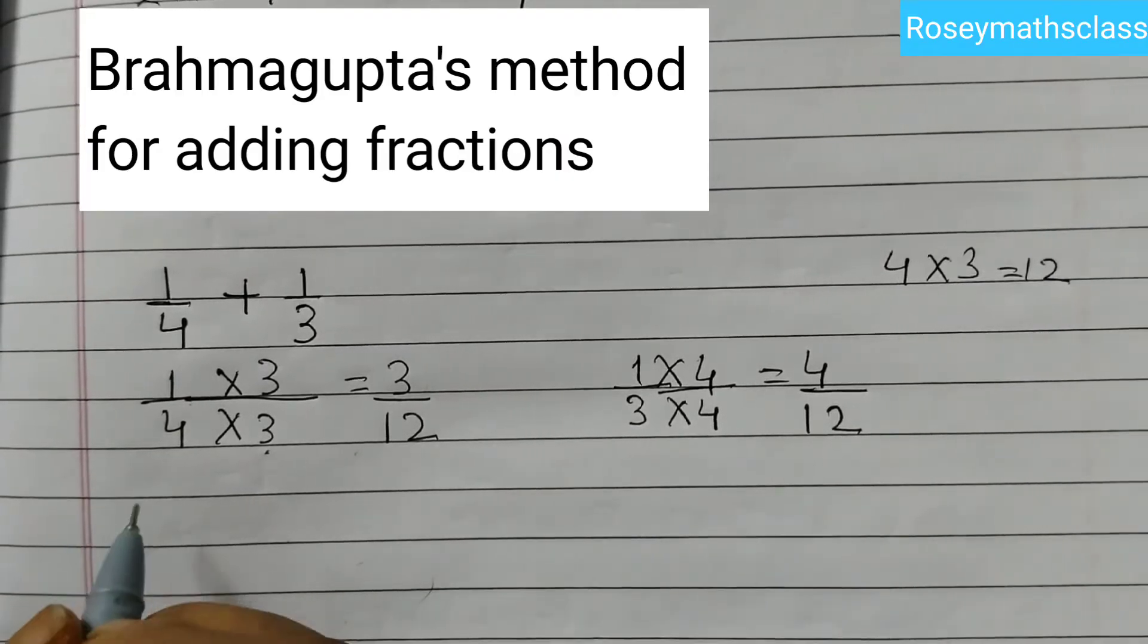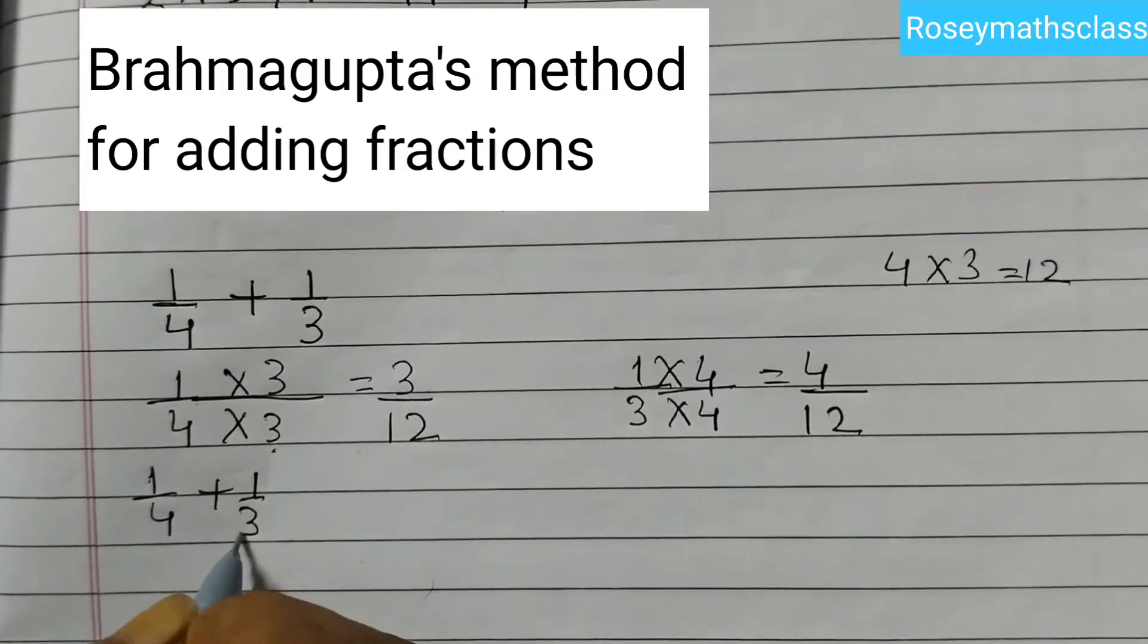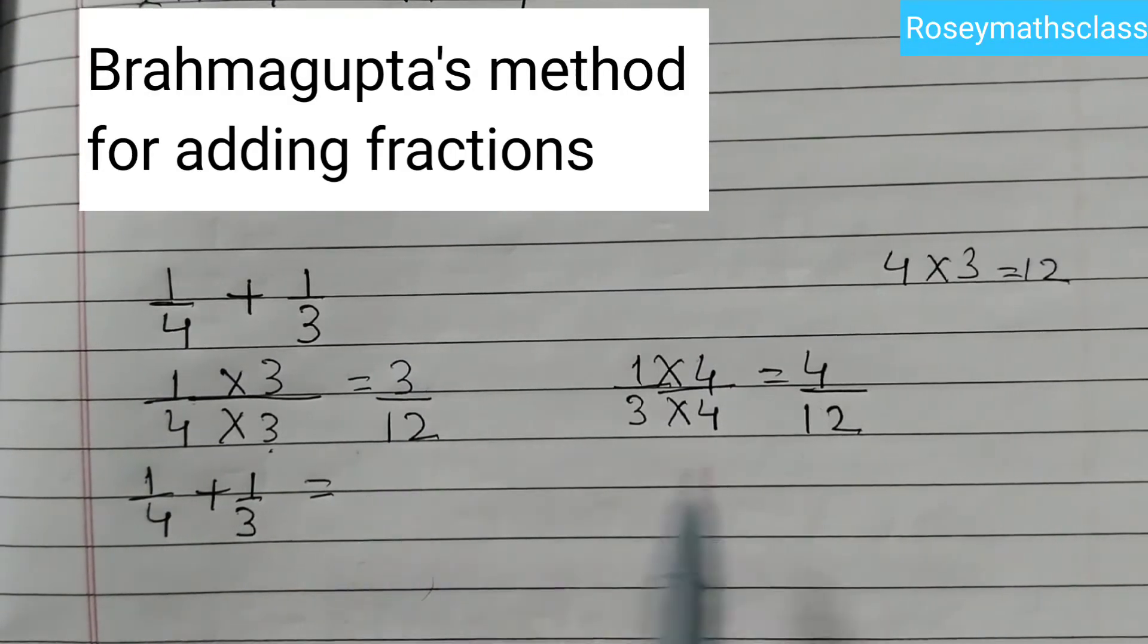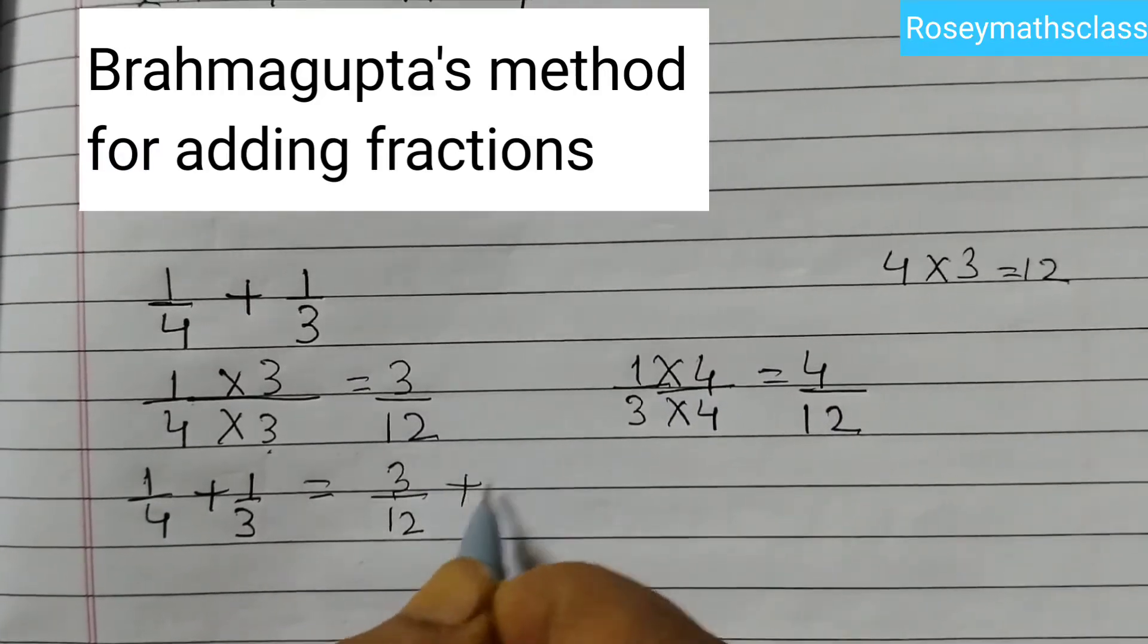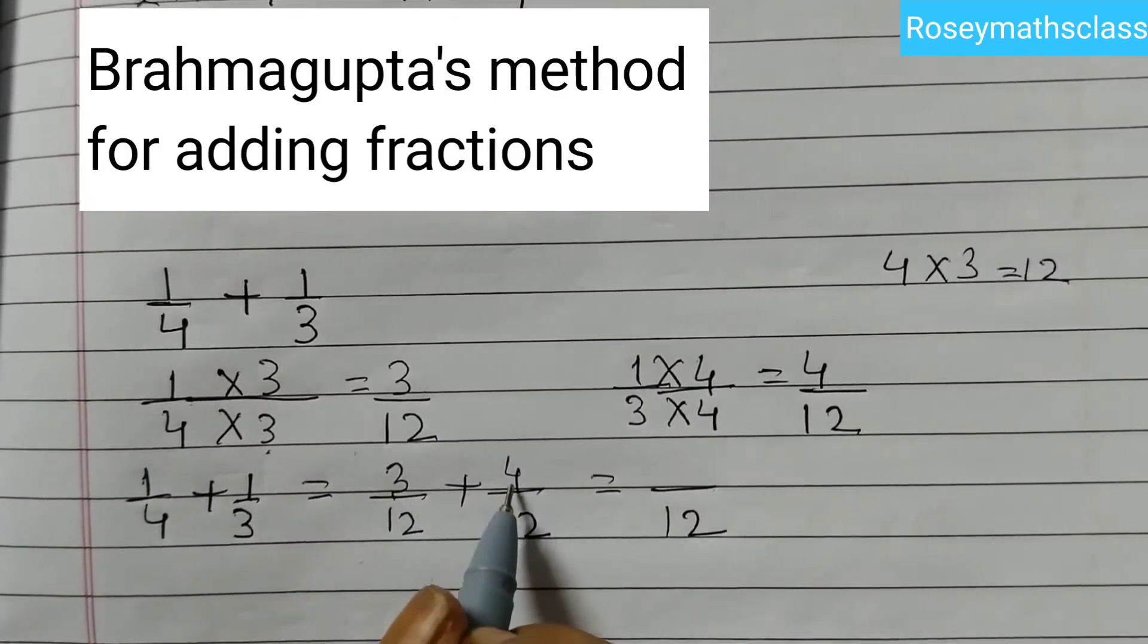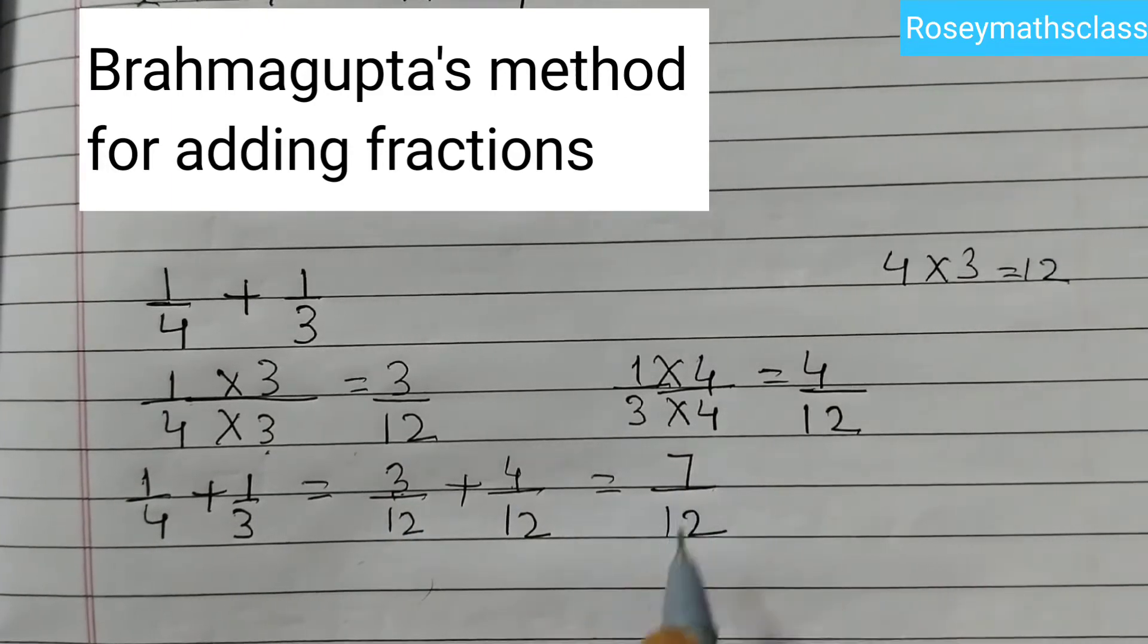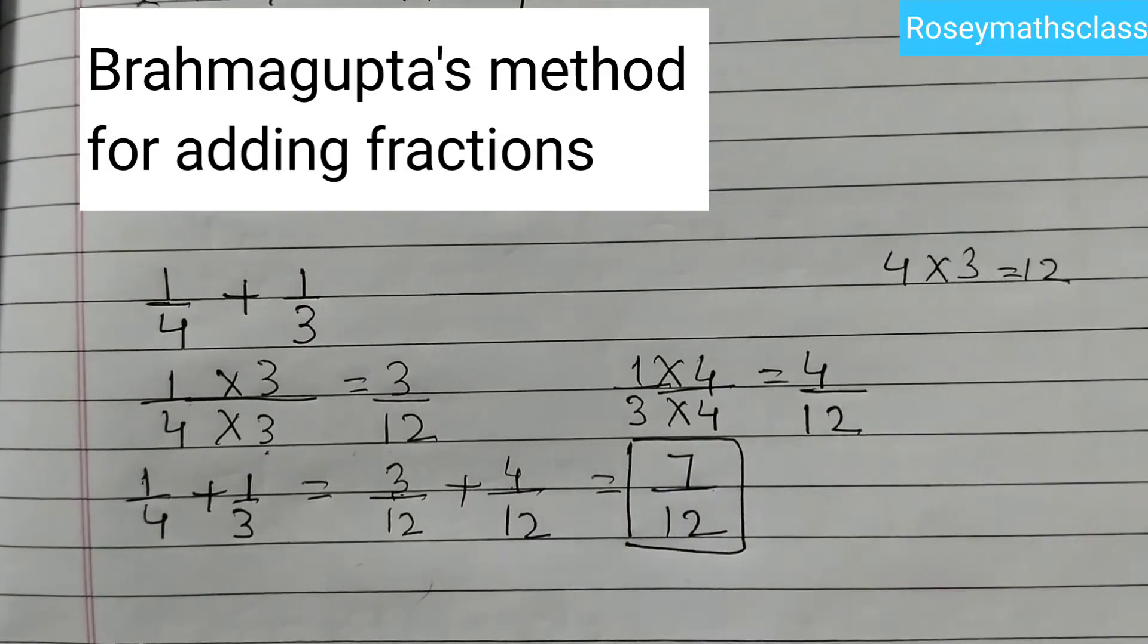Now we are going to add this. So 1 by 4 plus 1 by 3, we can write as 3 by 12 plus 4 by 12. And now keep the denominator as it is. Add the numerators. 3 plus 4 is 7. So the answer is 7 by 12.